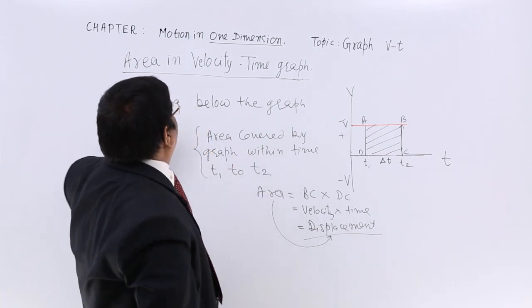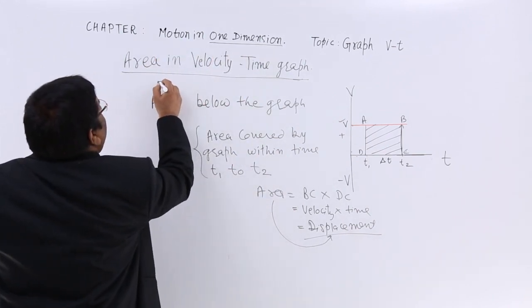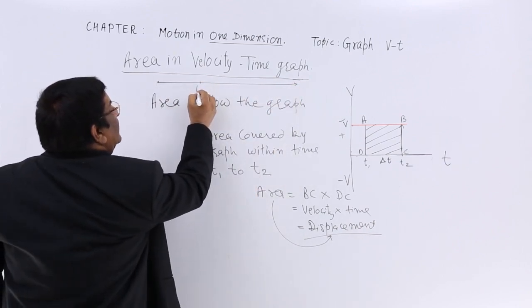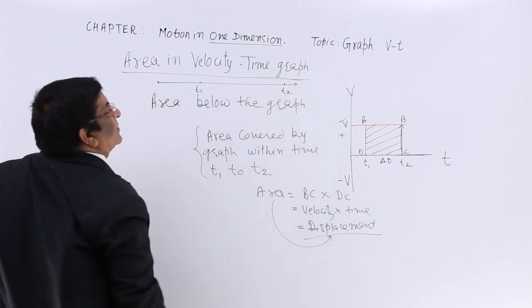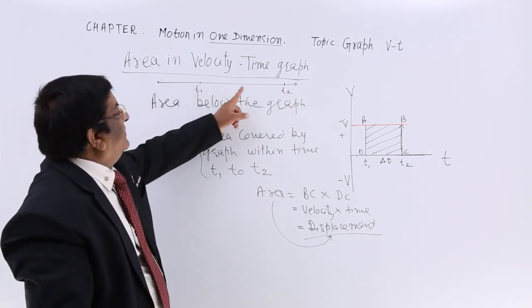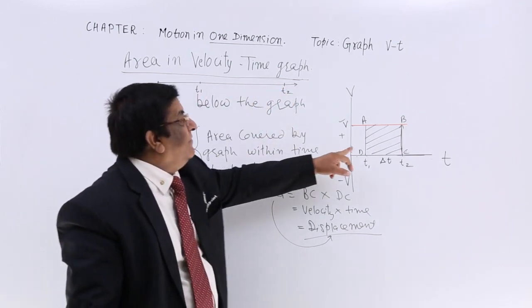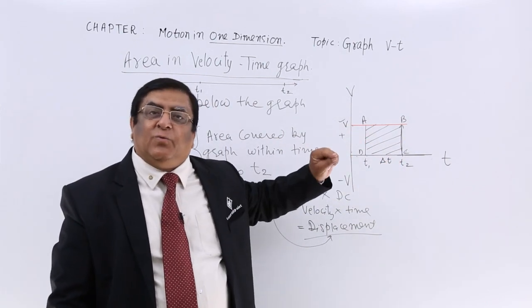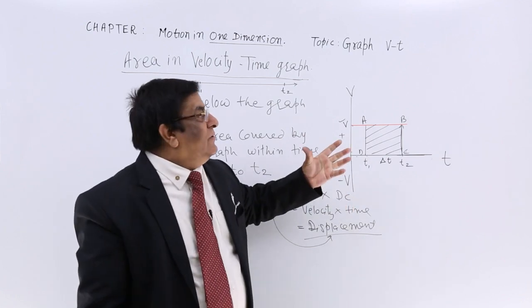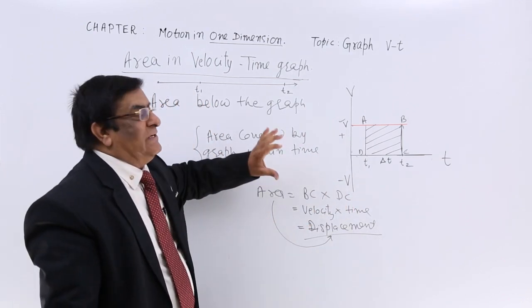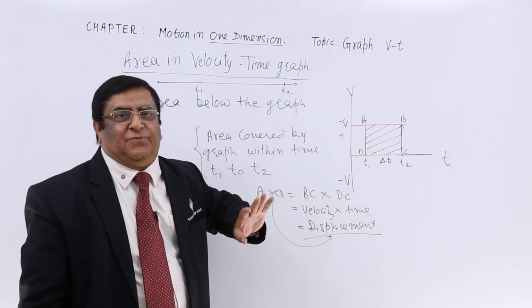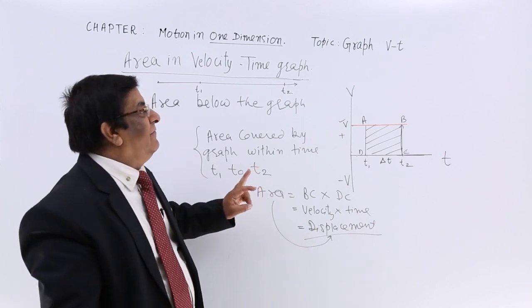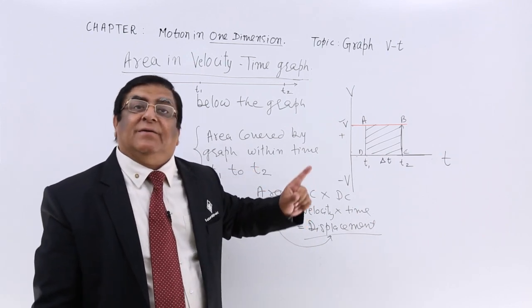So what is shown by area in VT graph? Answer: area in VT graph shows displacement. Displacement because all this is a particle is moving in a straight line. So from time t1 to time t2, what is the displacement from this place to this place? That is given by magnitude of this area. This is VT graph. Now the area under VT graph gives the displacement.